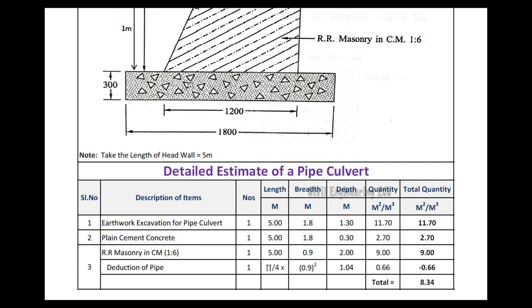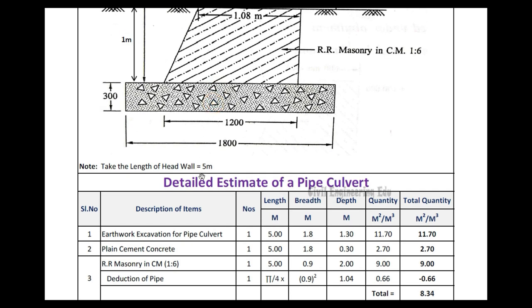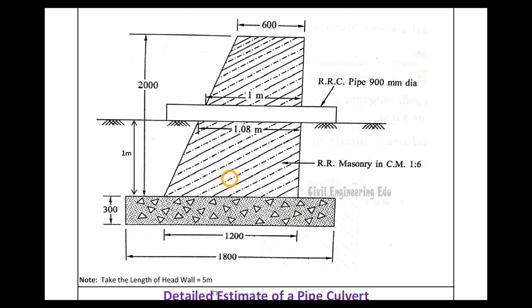For plain cement concrete, length is the same 5 meters, breadth is 1.8 meters, and thickness is 0.3 meters. Numbers are 1, length is 5 meters, breadth is 1.8 meters, and thickness of PCC is 0.3 meters. Calculating this gives a PCC quantity of 2.70 cubic meters.